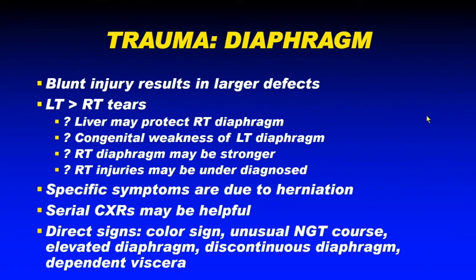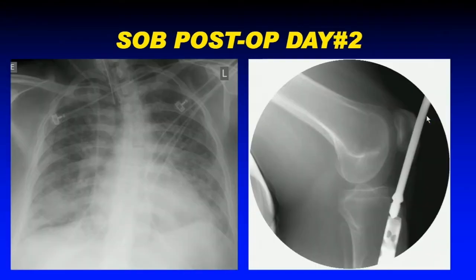Blunt traumas are much more common in diaphragmatic injuries, resulting in larger defects. There is speculation about why the left side is more common than the right, but no strong evidence for this. Direct signs to watch for include collar signs, unusual nasogastric tube courses, elevated diaphragms, discontinuous diaphragms, and dependent viscera.